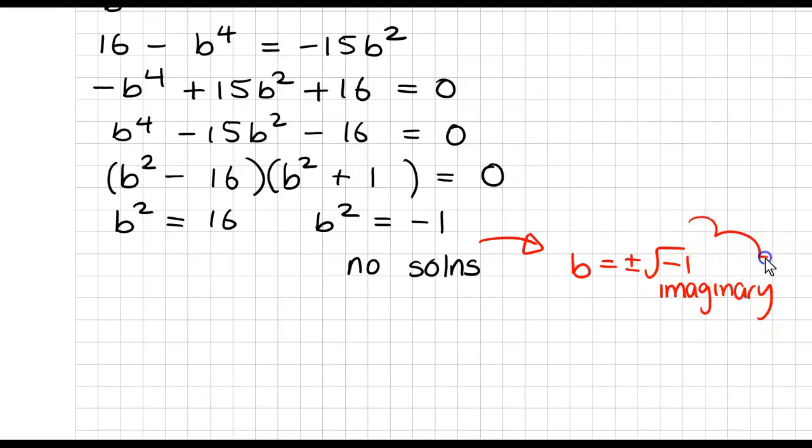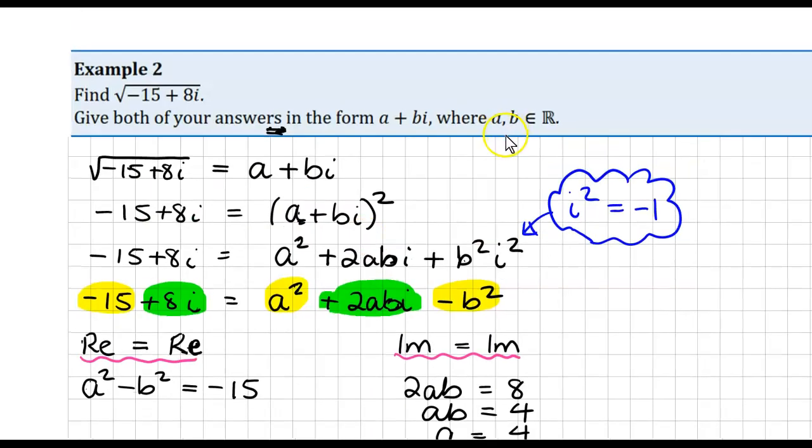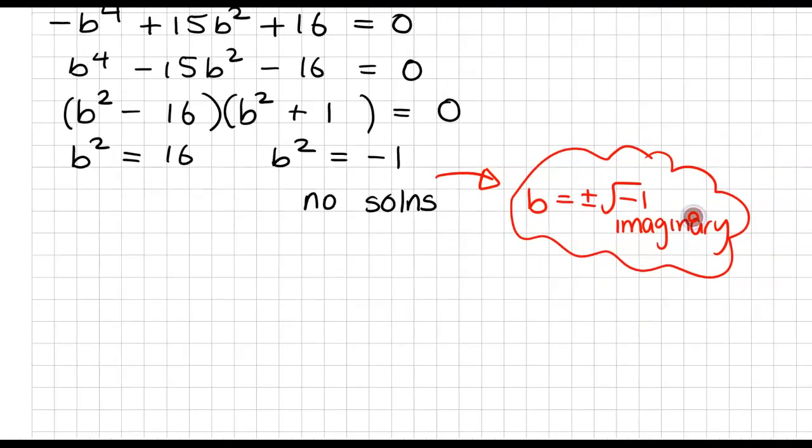Now, if you look at the top of the question, the actual A and B themselves are real numbers. The A and B themselves are real numbers. So that solution there is not valid. So if we look at the other solutions, then we have B squared will be equal to plus or minus the square root of 16. So B will be equal to plus or minus the square root of 4.